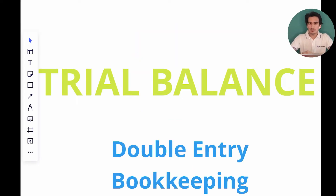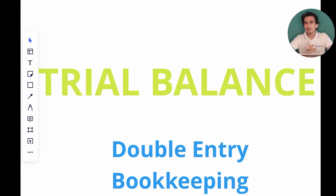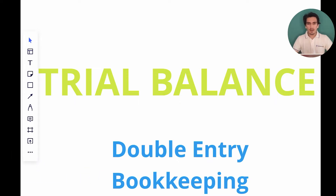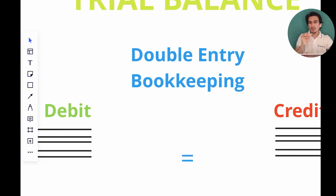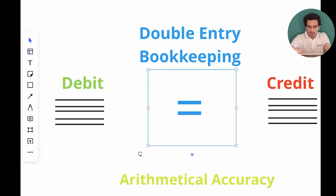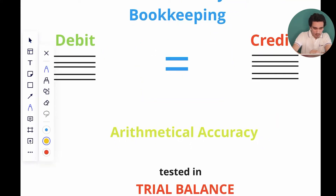In today's session we'll be talking about the trial balance, our chapter 3 in IGCSE accounting. We'll start by discussing the double entry bookkeeping system. In double entry bookkeeping, there are two types of entries for every single transaction — a debit entry and a credit entry. For all transactions there will be equal amounts of debit and credit entries, meaning if I add up all my debit entries and all my credit entries they should be equal. If the sum of my debit entries equals the sum of my credit entries, this means my books of accounts have arithmetical accuracy.